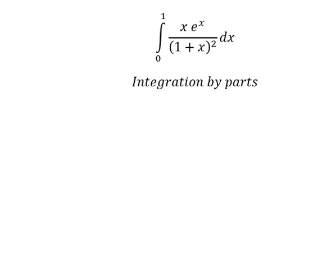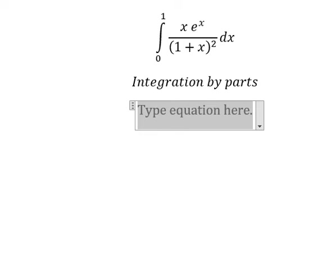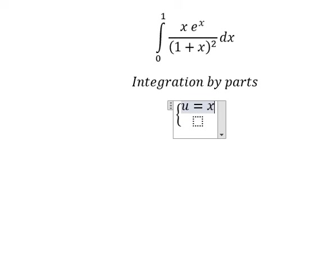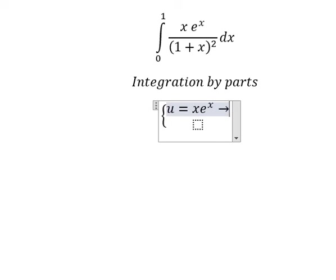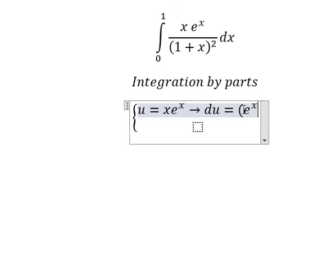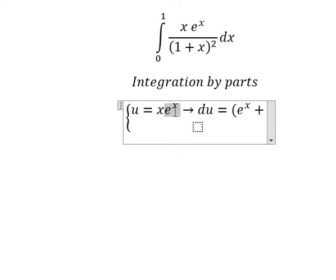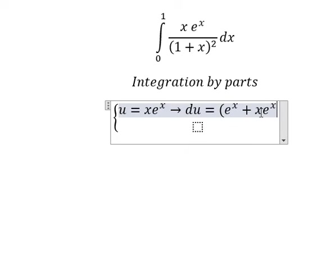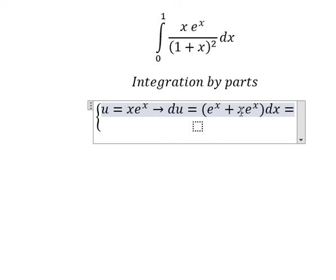I will set u equals s times e to the power of s. Now we do the derivative for both sides. The first derivative of s gives us one. The first derivative of e to the power of s we keep the same. Then we do factorization by e to the power of s.